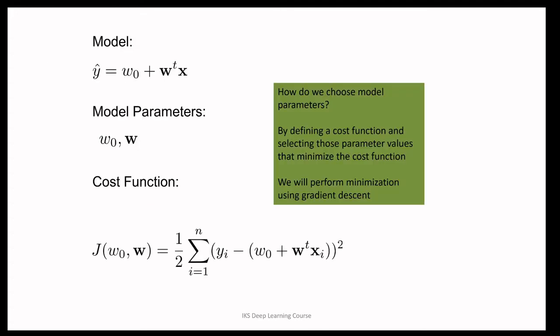So the question is: how do we choose model parameters? The way we do it is by defining a cost function and finding those parameter values that provide a minimal or optimal value for the cost function. Generally, this minimization is done using some kind of search technique — for example, a gradient descent search technique.